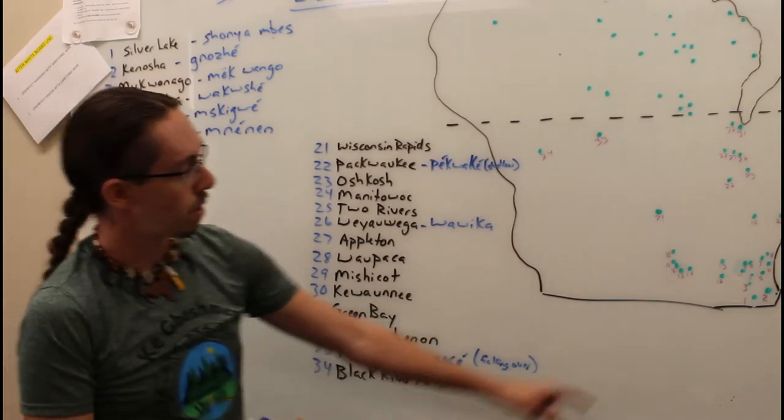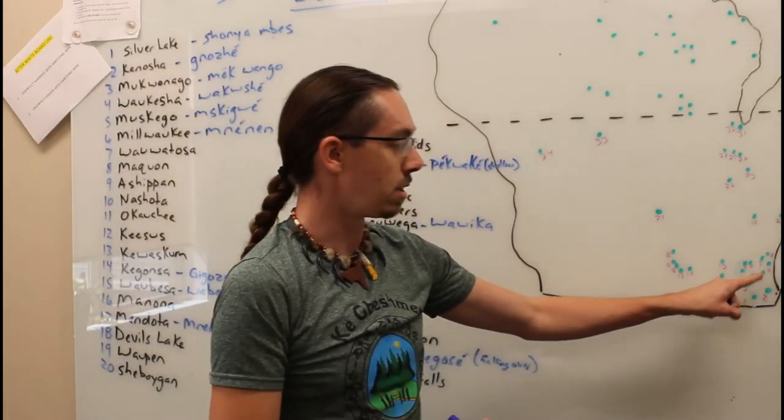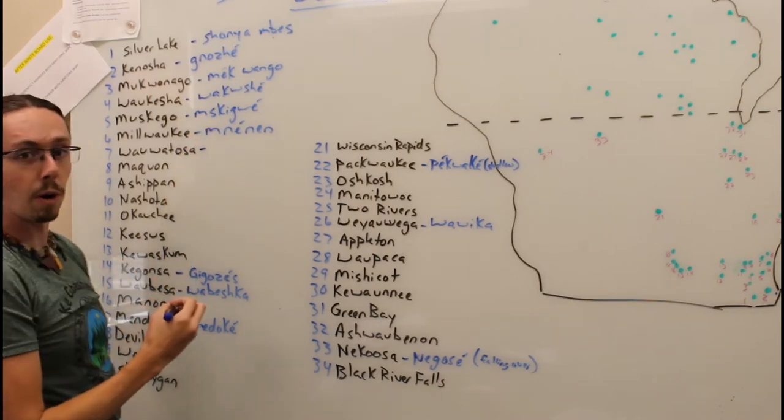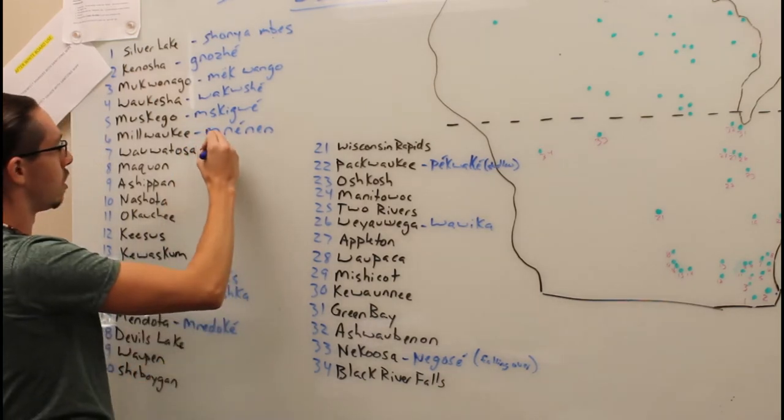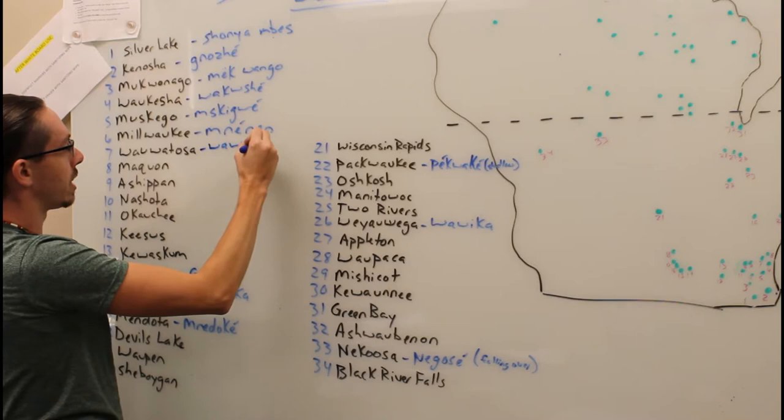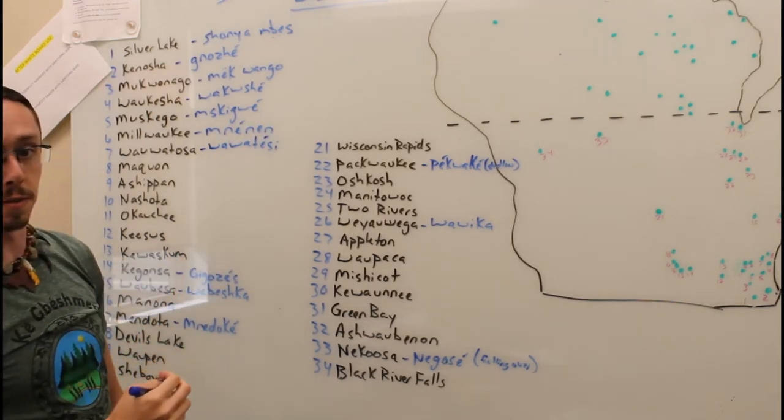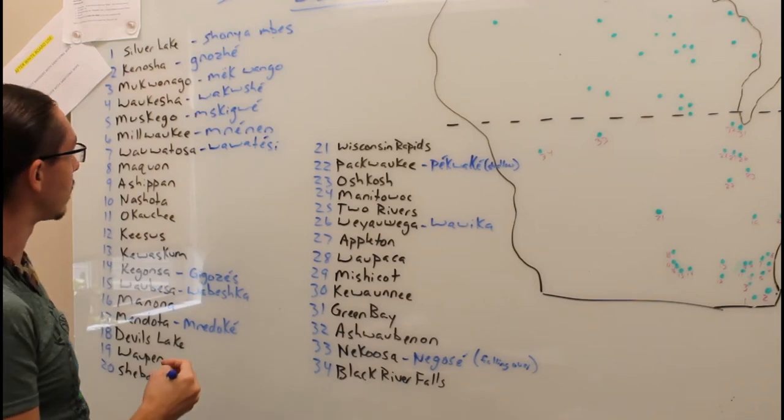Next, you have Wauwatosa, Wisconsin. Wauwatosa comes from our word Wauwatasi. Wauwatasi is a firefly.